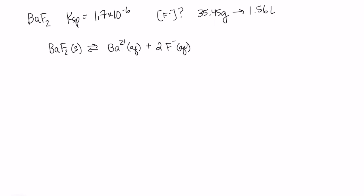And the amount that will dissolve is x and 2x. Because of the stoichiometry there, we get two fluoride ions for each barium ion.